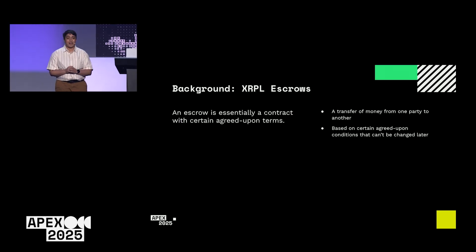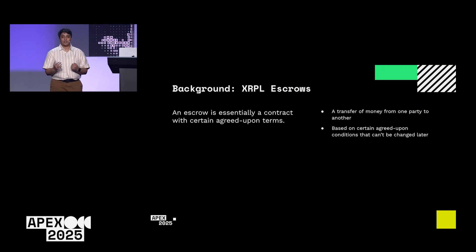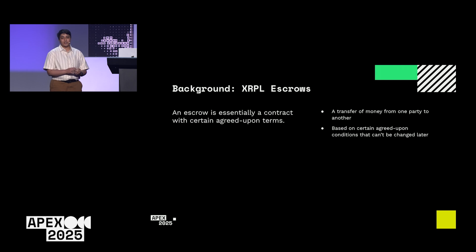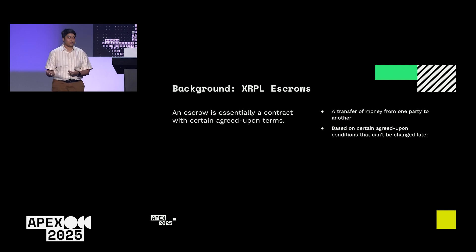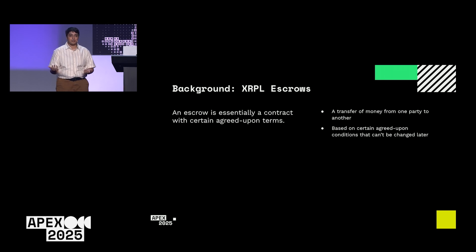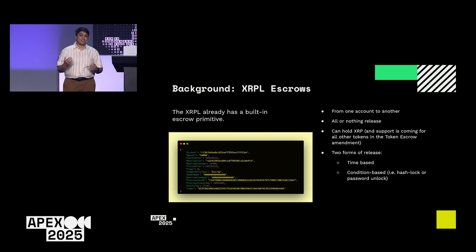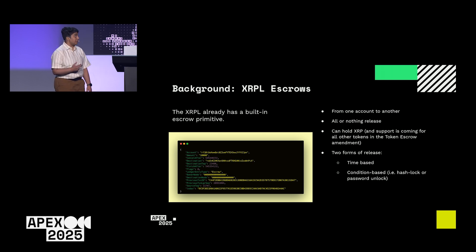Let's start with a little bit of background. What are escrows? Escrows are essentially a contract with certain agreed-upon terms. You have a transfer of money from one party to another, and there are some terms on how that transfer of money works. These terms are usually fixed — you can't really change them later because it's a contract. The XRPL actually has a built-in primitive for this that you can already use.